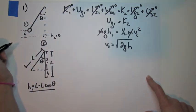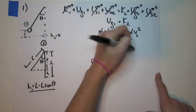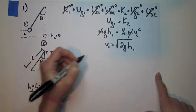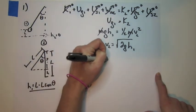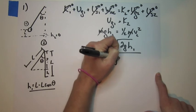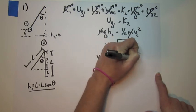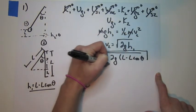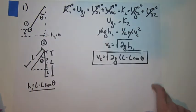V2 equals square root of 2GH. Now H isn't given, but we did already determine that it's equal to L minus L cos theta. And so there we have our equation for number one.